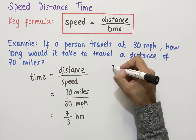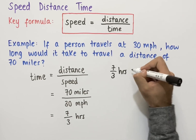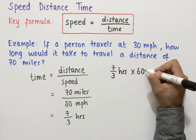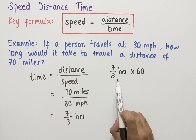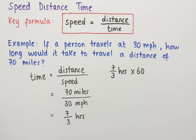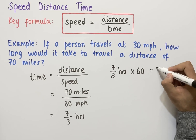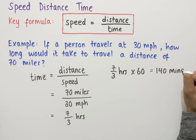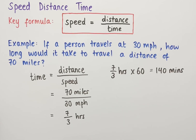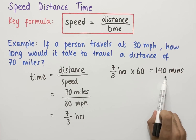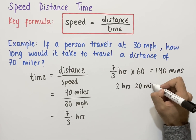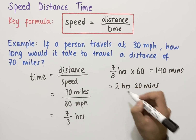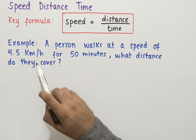We can convert 7/3 hours into minutes by multiplying by 60. 60 multiplied by 7 equals 420, and 420 divided by 3 equals 140. So we have 140 minutes. This can also be written in hours and minutes: 140 divided by 60 gives us 2 hours and 20 minutes. Any of these answers would be acceptable.